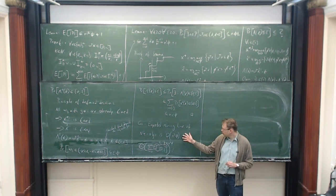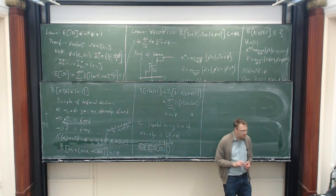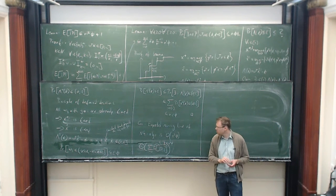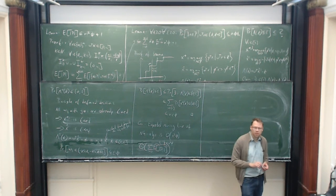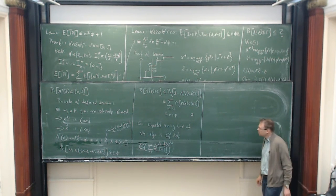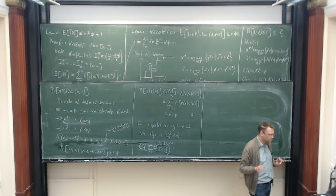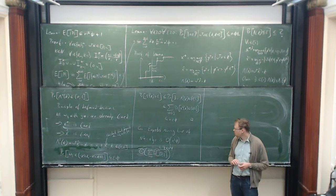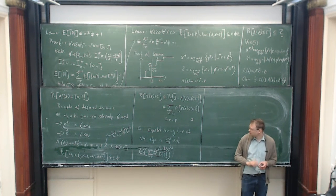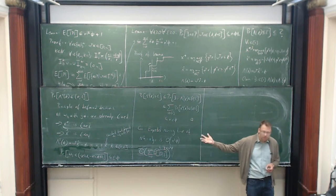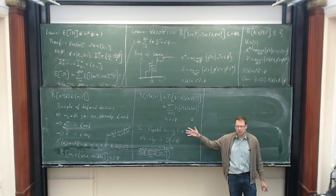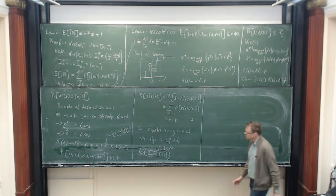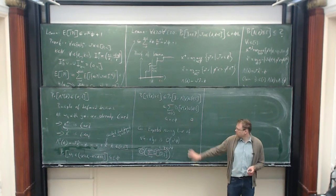A couple of remarks: this n³ running time is not the algorithm with which you can solve instances with billions of items. With a careful implementation I think it's easy to solve instances with thousands of items, but solving instances with 10,000 items is already problematic in terms of memory and running time. In my next presentation I will give a hint about how algorithms that can solve large instances look like — they use this actually as a subroutine, applying the Nemhauser-Ullmann algorithm not for the whole instance but just for a small subinstance. So even though this algorithm alone won't solve large instances, it's still very useful.